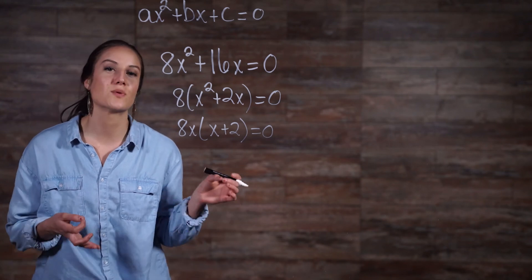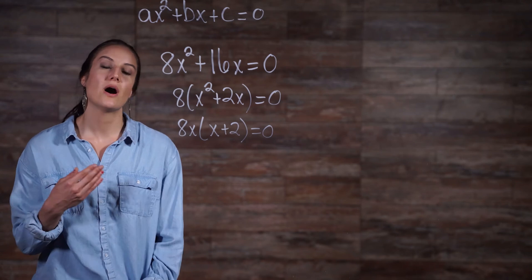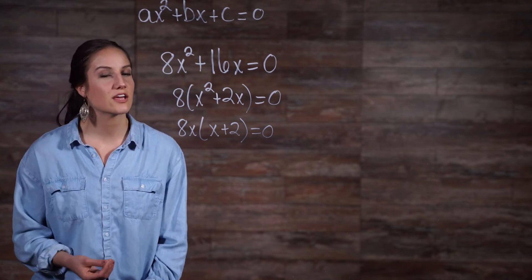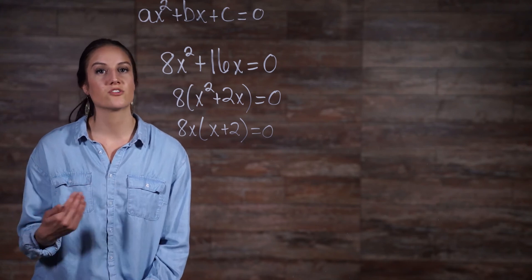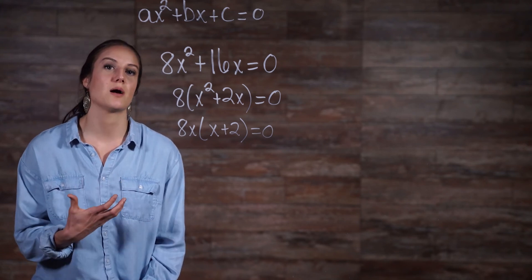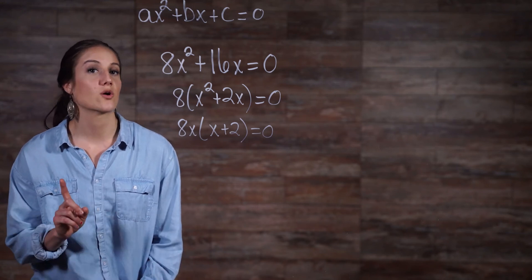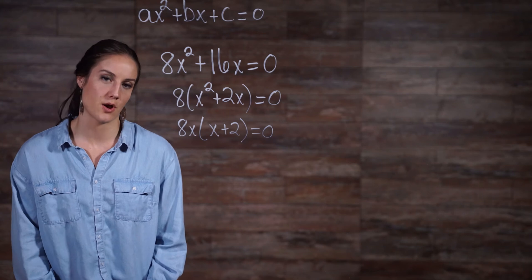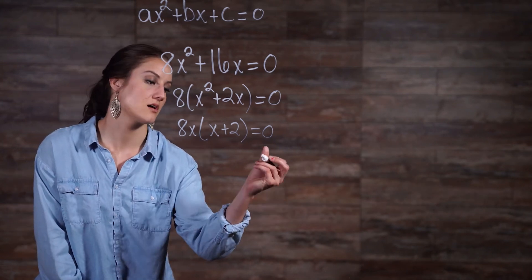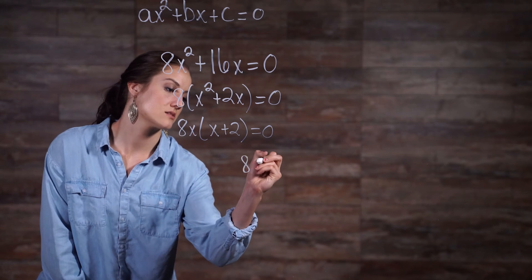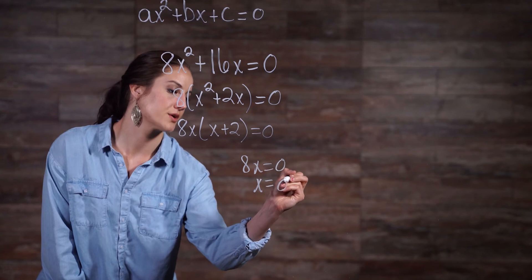Now maybe you're asking, why on earth do I even need to factor? Why can't I just leave it as it is? Well, if you recall, a quadratic equation is always a parabola, or a u-shaped graph. Well, factoring the quadratic equation sets us up to be able to find out where exactly our roots are. And our roots just mean where a graph is equal to 0. To do this, we would just set each of our factors equal to 0, then solve. So we have 8x equals 0, and when we solve, we get x equals 0.